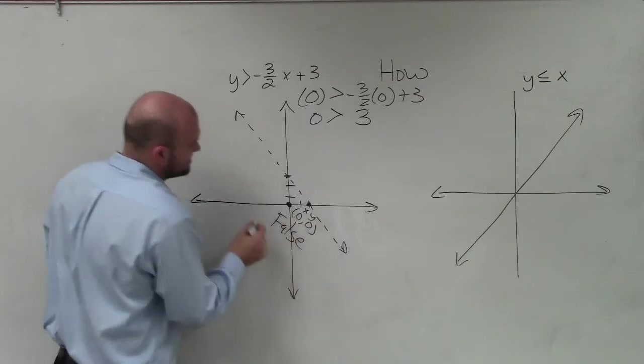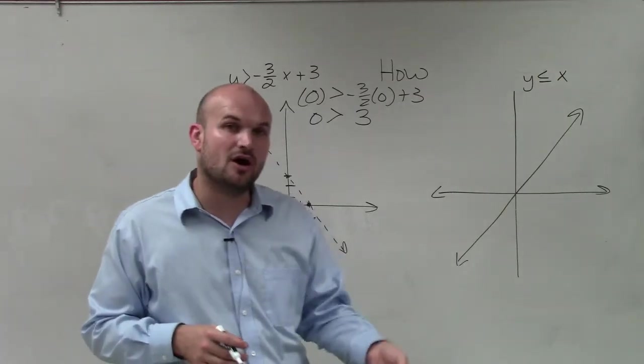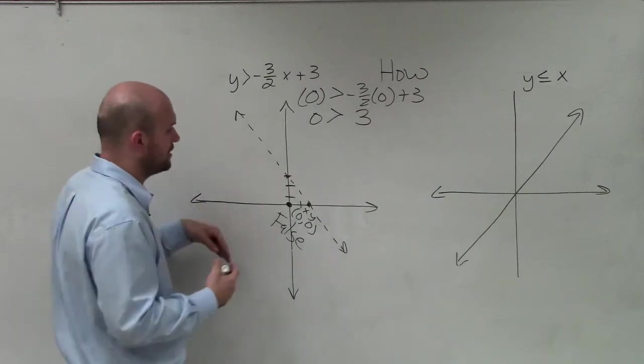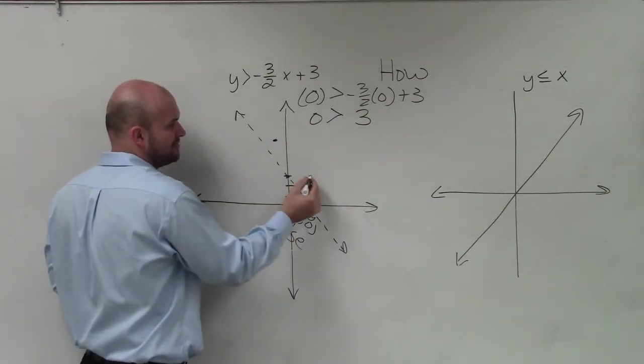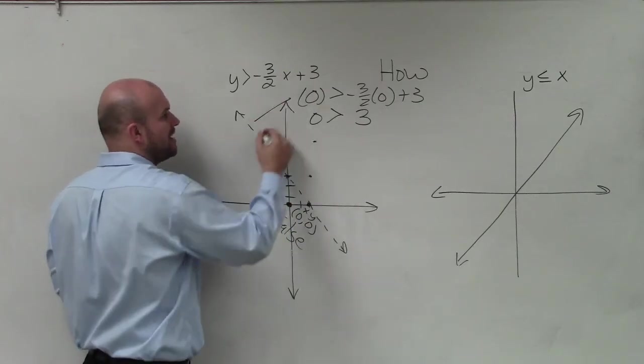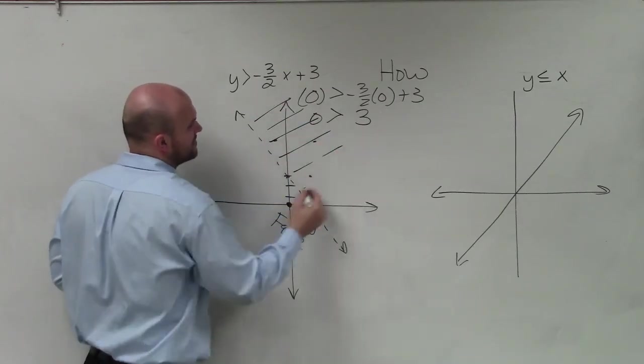So what that means is, if one point below the line is false, that means all points below the line are false, and all points above are true. So rather than plotting all those points, we just do some nice shading here.